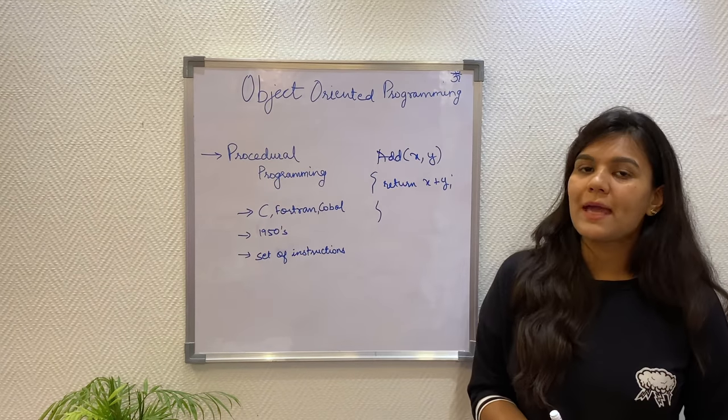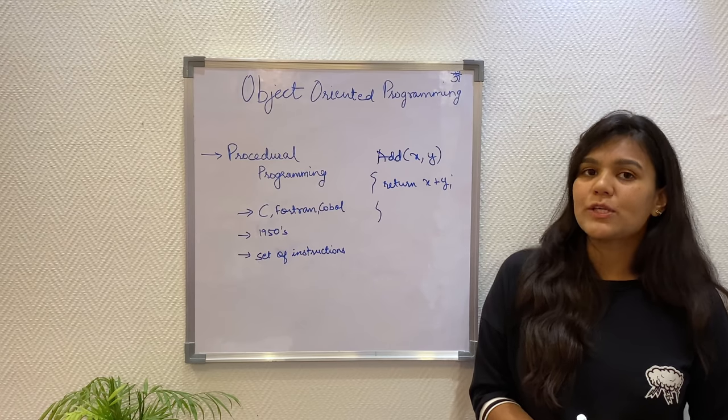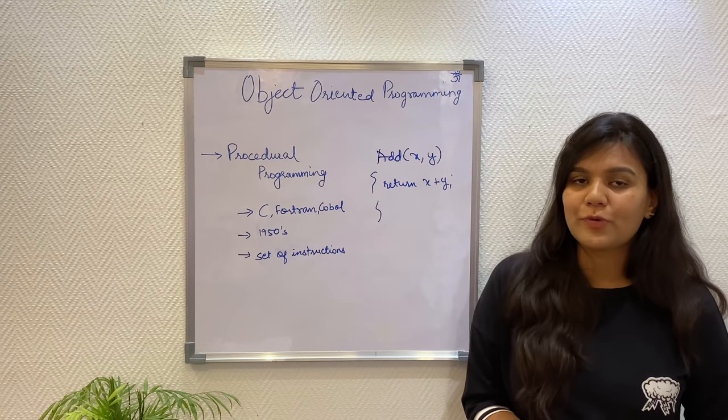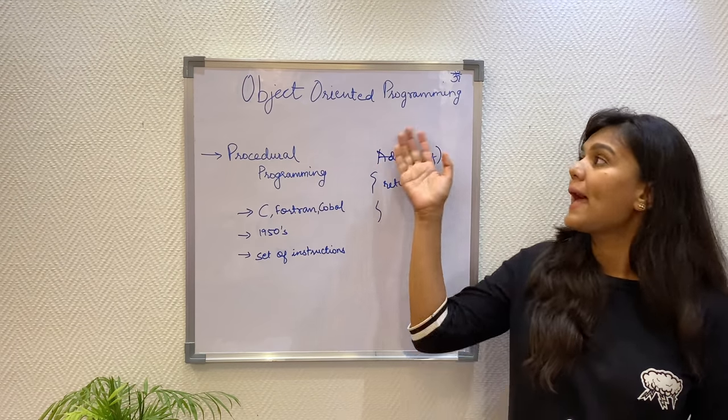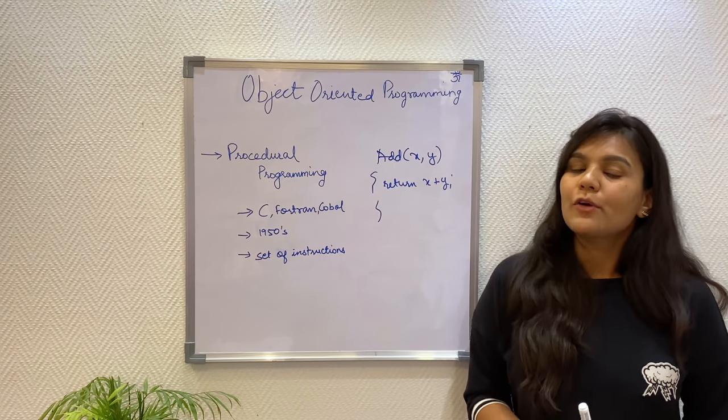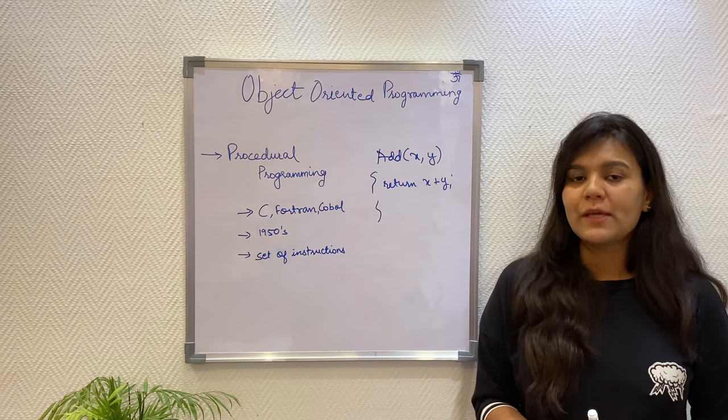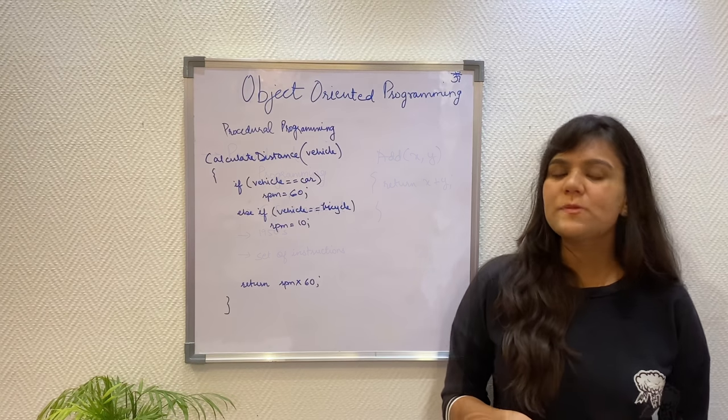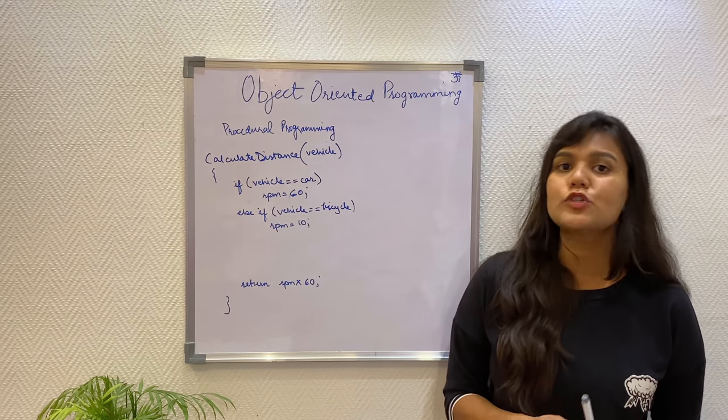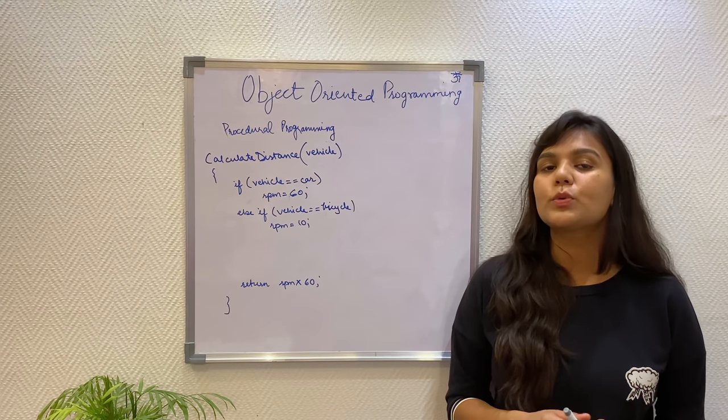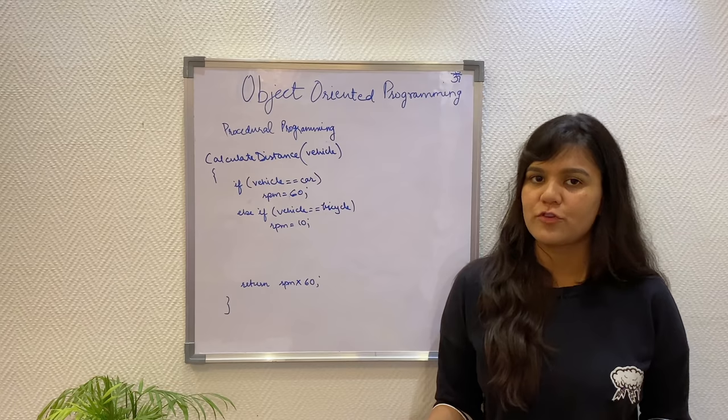But procedural programming had certain drawbacks which led to the advent of the object-oriented programming. To understand the differences between the procedural programming and the object-oriented programming, we will solve a real-world problem by writing the code. Problem specification given to us is that we need to calculate the distance for two vehicles based on their rotations per minute and the time they have traveled for.